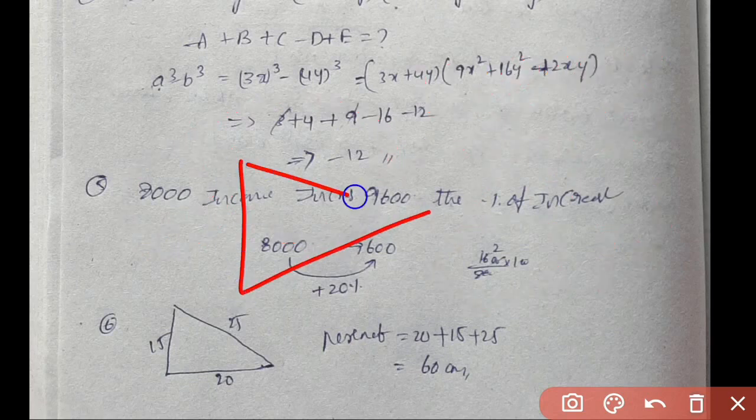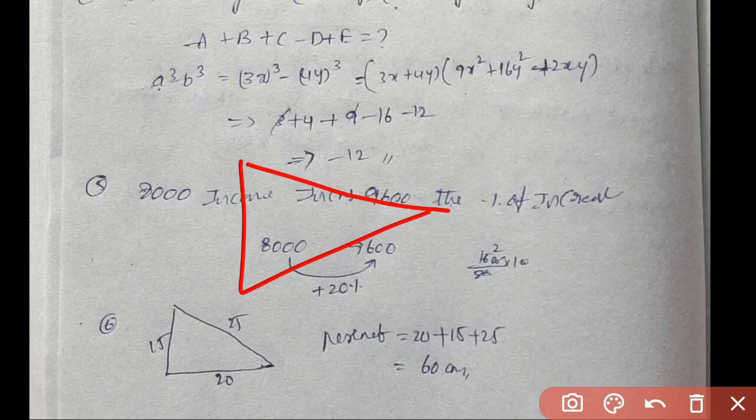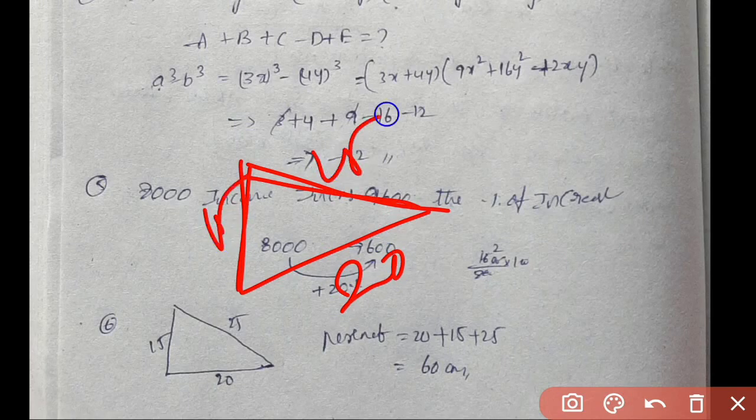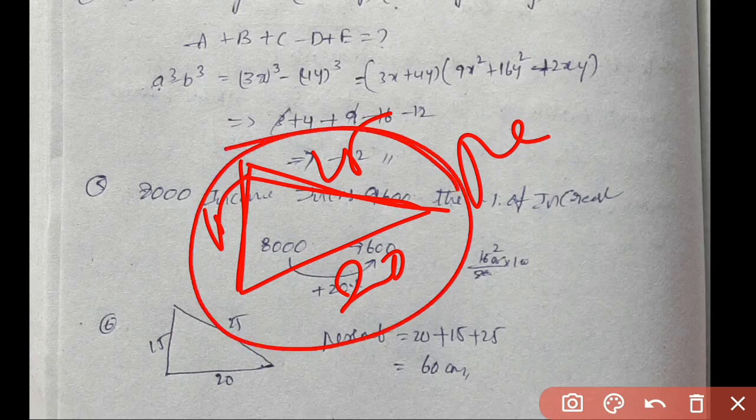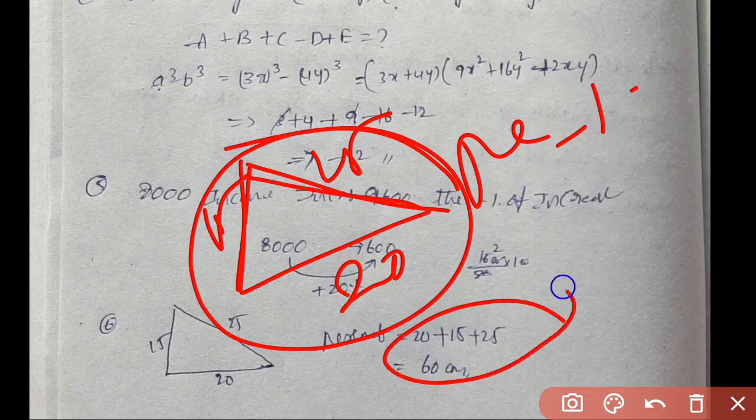Triangle problem. Triangle sides value, find perimeter. Perimeter: all sides plus. That's the perimeter.